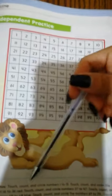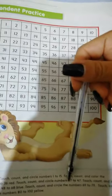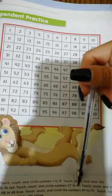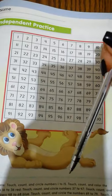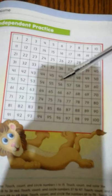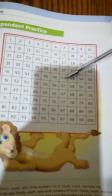Then touch, count, and circle numbers 37 to 47. With a pencil as well, you circle numbers from 37 to 47. 37 to 47.